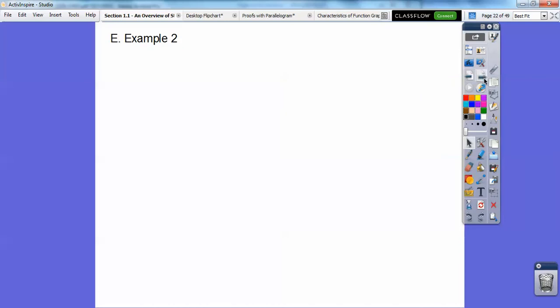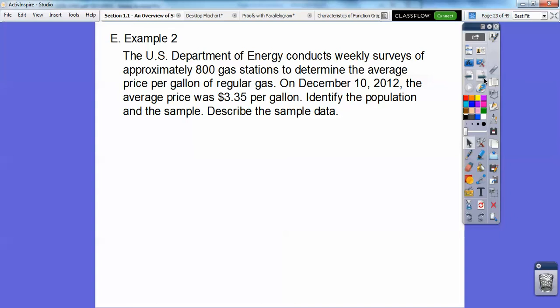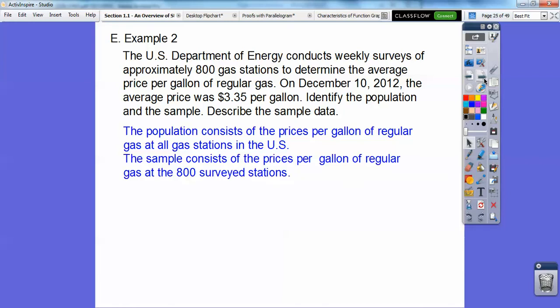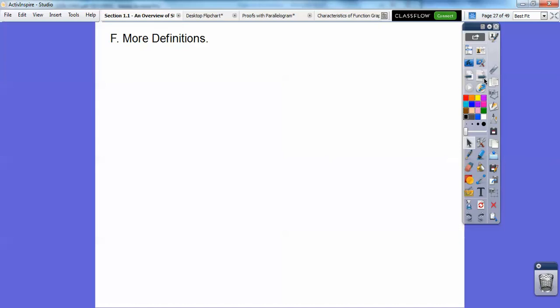Let's try another one. The U.S. Department of Energy conducts weekly surveys of approximately 800 gas stations to determine the average price per gallon of regular gas. On December 10, 2012, the average price was $3.35 per gallon. Identify the population and the sample and describe the sample space. The population consists of the prices per gallon at all the gas stations in the United States. The sample consists of the price per gallon of the regular gas at the 800 that they surveyed in that one survey. The data consists of those 800 prices.